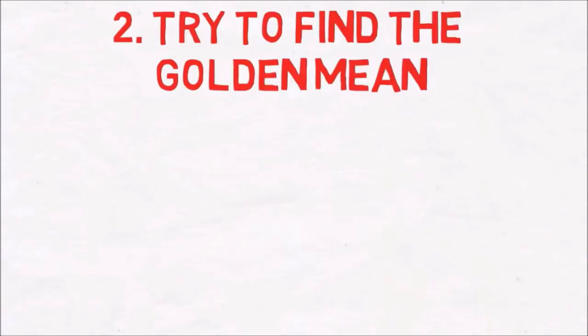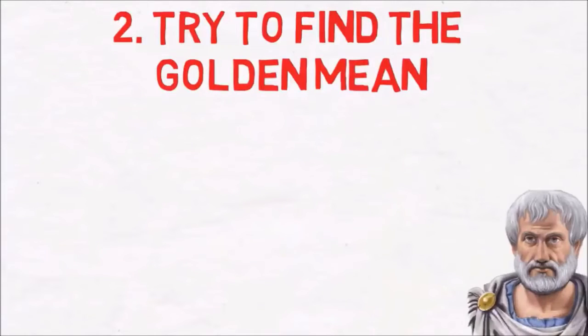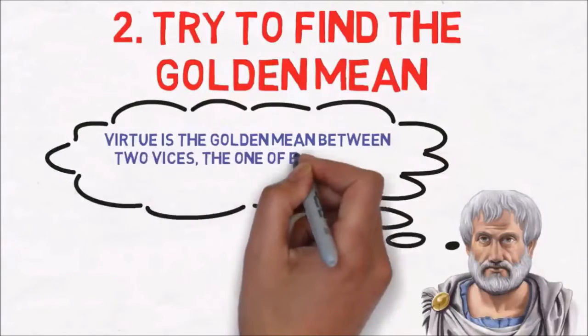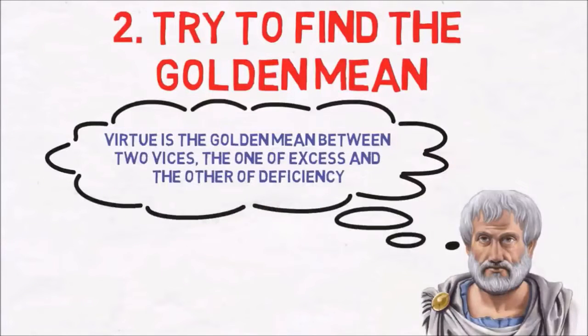Number two: Try to find the golden mean. Aristotle tells us, virtue is the golden mean between two vices, the one of excess and the other of deficiency.